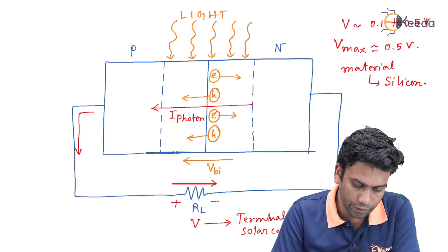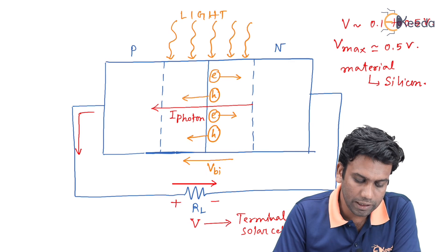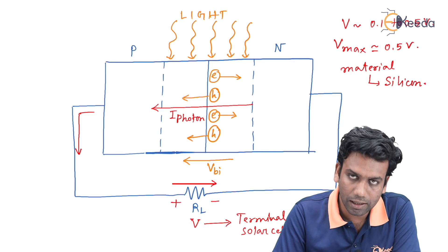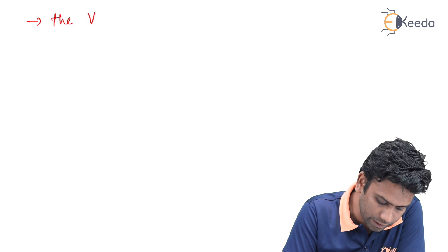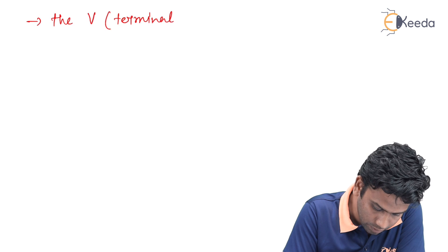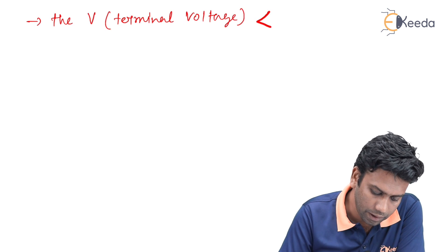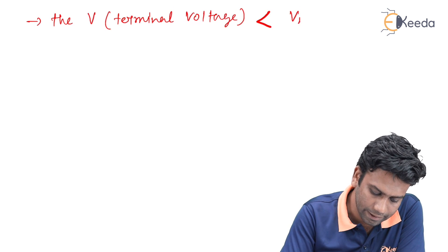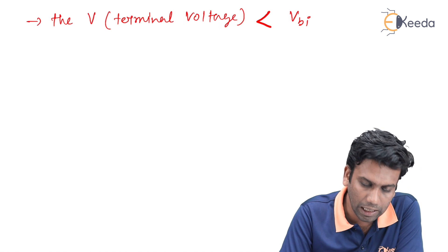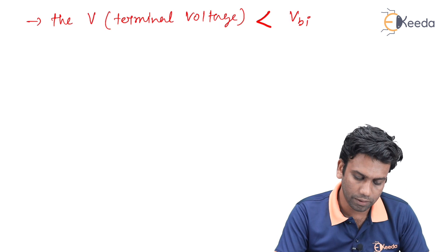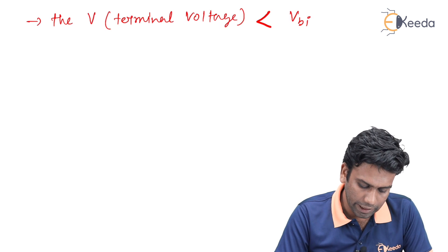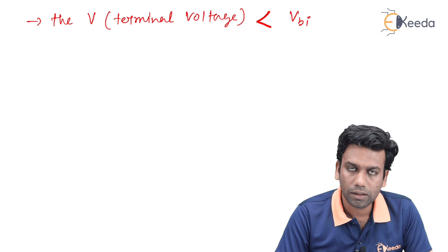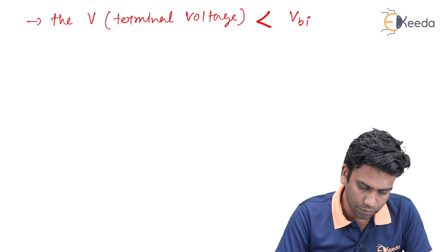The terminal voltage of the solar cell is always less than the contact potential. We can write that the terminal voltage V will always be less than the contact potential V_BI, or built-in potential. This terminal voltage can be practically measured by a voltmeter from the outside.